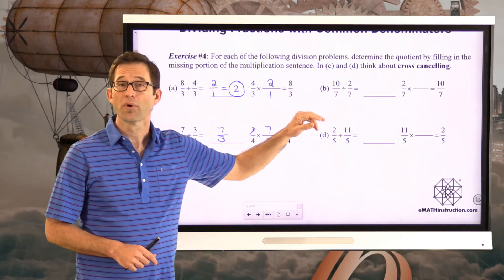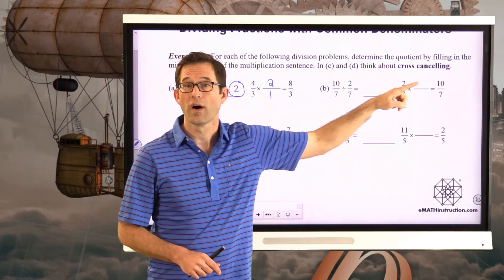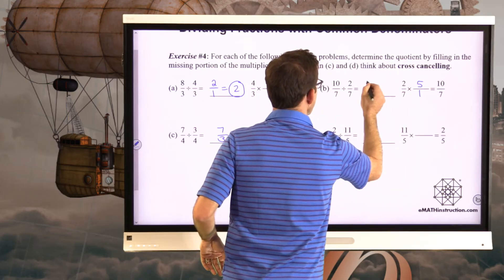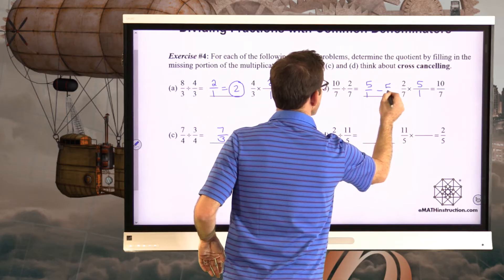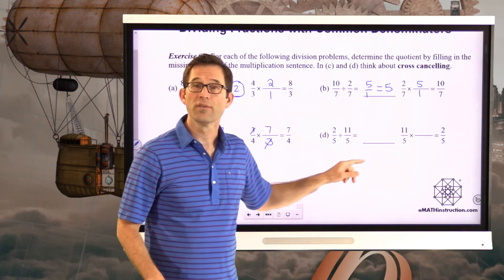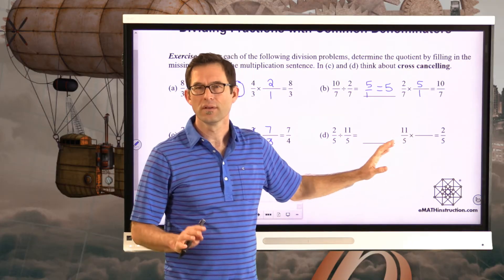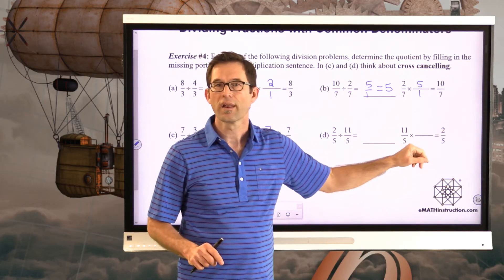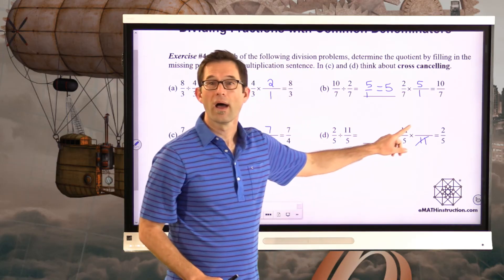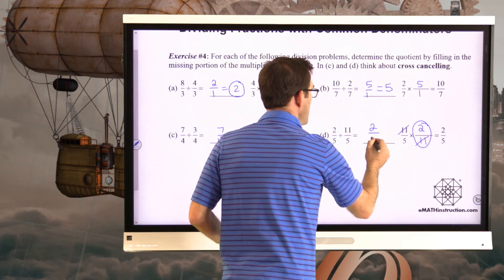Letter B: what do we have to multiply 2 sevenths by to get 10 sevenths? Two times 5 is 10, and 7 times 1 is 7, so that's 5 firsts, which equals 5. Letter D: 2 fifths divided by 11 fifths. I want the 11 to go away, so I need an 11 in the denominator to cancel, and a 2 up top. So the answer is 2 elevenths.